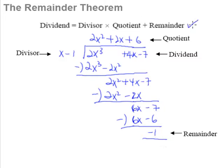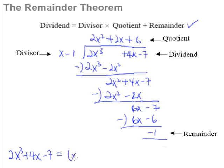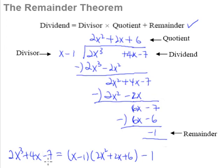Since we figure out that the dividend is equal to the divisor multiplied by quotient plus remainder, what this is trying to tell us is that 2x³ + 4x − 7 can be written as the divisor, which is (x − 1), multiplied by the quotient, which is 2x² + 2x + 6, plus the remainder, which is negative 1. When you expand this out, you will get your dividend — this polynomial over here.